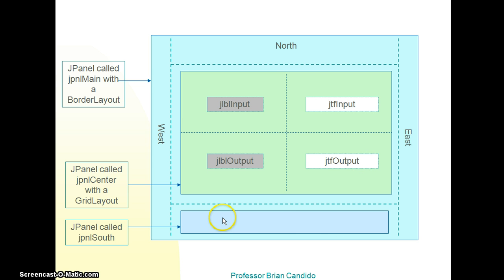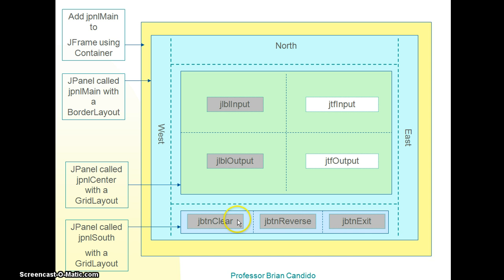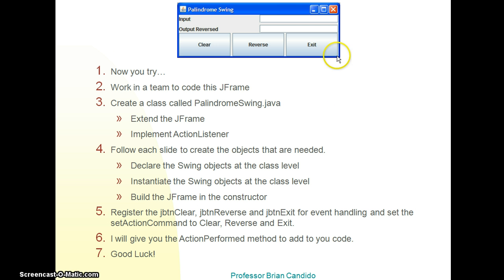We then create a third panel called south that we put right here. And you guessed it. We're going to divide into one row with three columns. And we're going to add our three buttons to the panel south. And here's what we get as a look and feel.